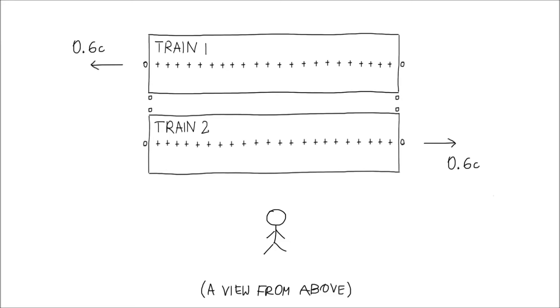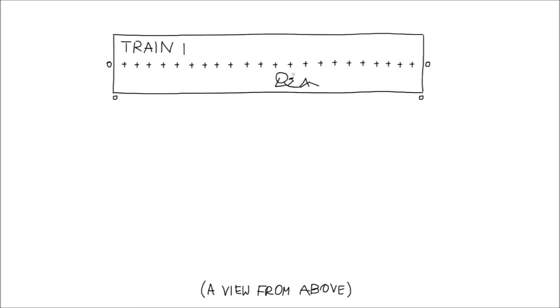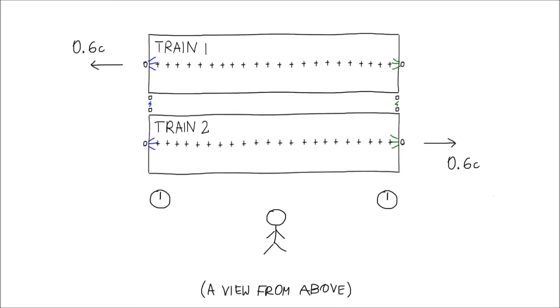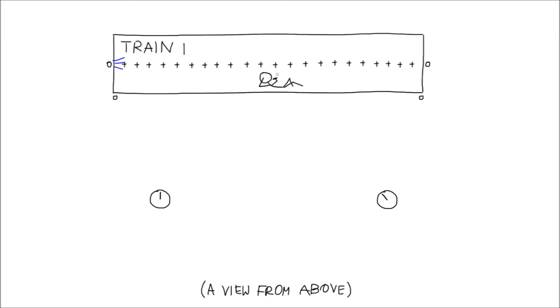As a result, an outside observer concludes that all lamps flashed simultaneously. A person in the train moving to the left concludes that the lamps on the left flashed first. A person in the train moving to the right concludes that the lamps on the right flashed first. Clocks synchronized for one observer are not synchronized for others.